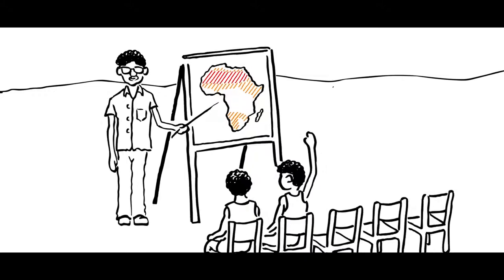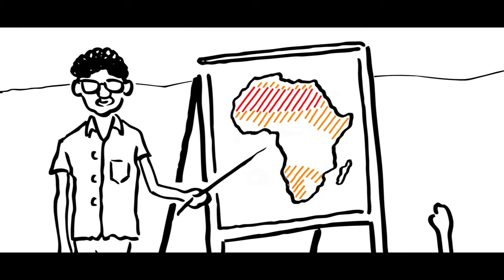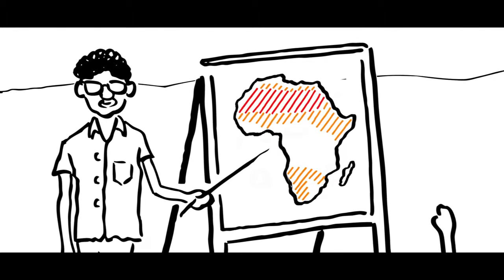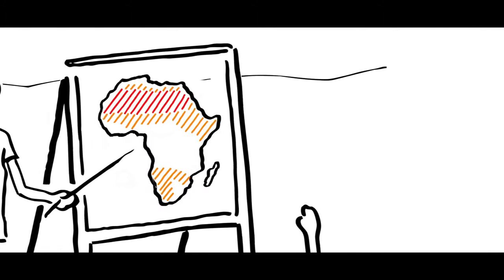Today, over two-thirds of Africa consists of desert and semi-desert areas. Desertification affects over 65% of Africa's population.